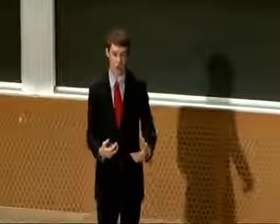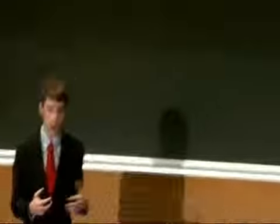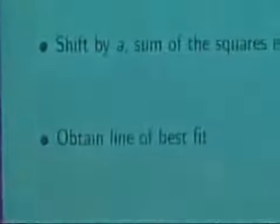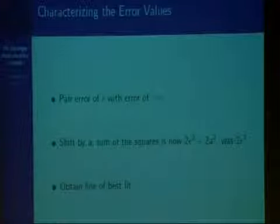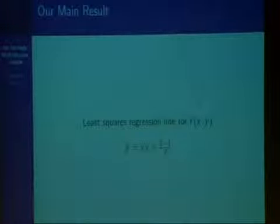We've shown you can pair a point of error epsilon with a point of error negative epsilon. If we try to shift our line by some constant a, the sum of squares of any pair of errors becomes 2ε² + 2a², whereas previously it was just 2ε². Since we're minimizing the sum of squares of errors, it's optimal to have a equal to 0. Therefore this is the line of best fit, assuming our chosen slope is optimal — and we can show it is, since a different slope would cause the approximation to diverge from the function as y grows. The least squares regression line is ŷ = x-bar · y + (x-bar − 1) / 2.